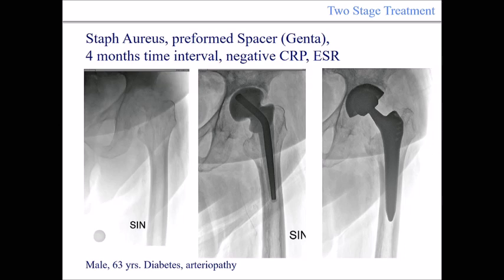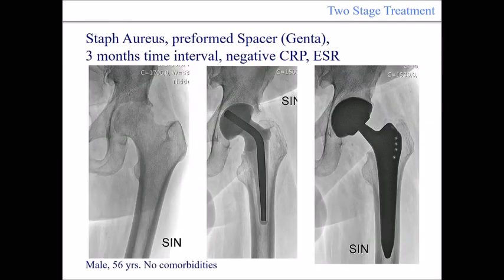Another case: Staphylococcus aureus in a 63-year-old male with diabetes and arteriopathy. We used a preformed spacer with gentamicin, a four-month time interval, with negative CRP and ESR. The second stage was performed with a cementless implant.